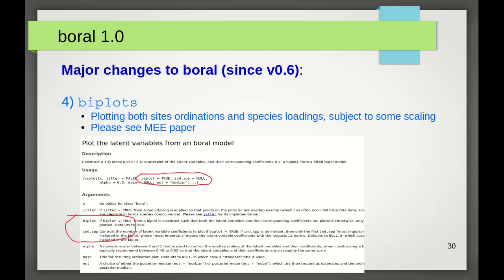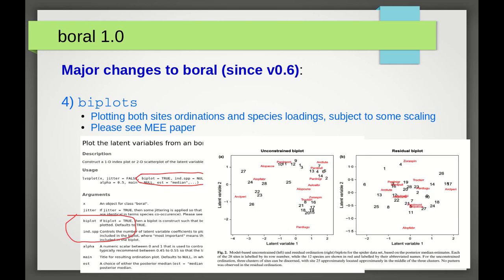Number four. Bi-plots. Whereas in version 0.6, only plots of the site ordinations were constructed, you can now construct model-based bi-plots in boral, which jointly plot site ordinations and their corresponding species loadings. There is a little bit of tinkering to play with on the scaling, but in principle, such model-based bi-plots should allow users to visualize the main differences in community composition between sites, as well as to indicate a species characterizing some of the sites.